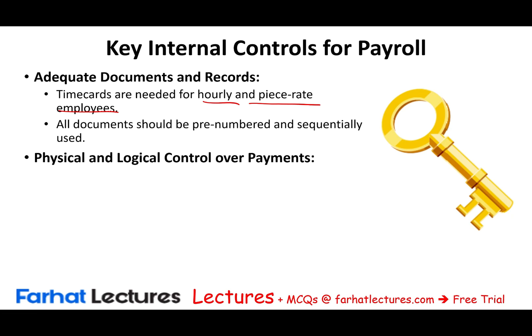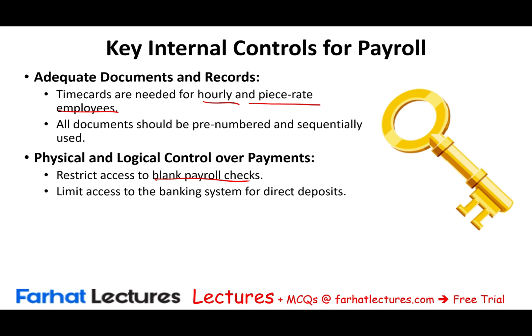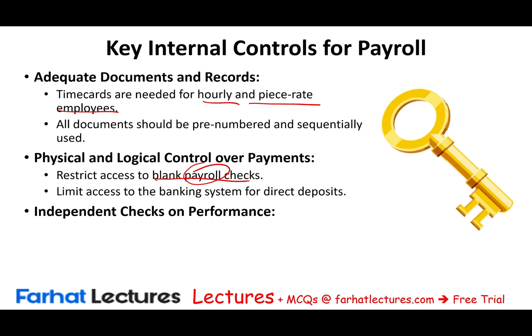Physical and logical control over payment is essential. We should not let any individual have access to blank payroll checks. Logical access should also be limited — restrict access to the banking system for direct deposit so that not just anyone can add wire instructions and send money from the payroll account. Additionally, a key internal control for all cycles is independent checks on performance: management — usually the controller — reviews payroll for obvious errors and reasonableness.